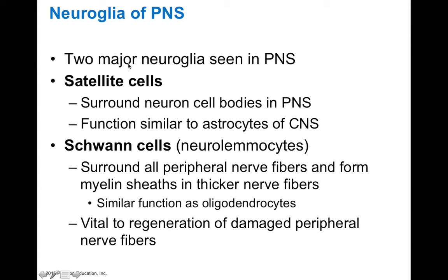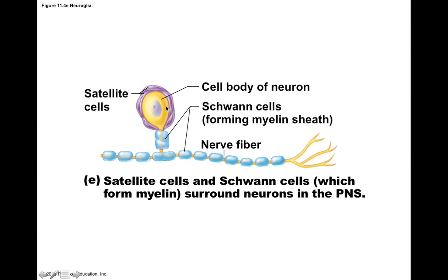In the peripheral nervous system, we have two major neuroglia: satellite cells and Schwann cells, also called neurolemocytes. Satellite cells surround neuron cell bodies in the peripheral nervous system and function similarly to astrocytes in the CNS, protecting and monitoring the environment around neurons. Schwann cells are functionally similar to oligodendrocytes — they surround peripheral nerve fibers and form the myelin sheath. They are vital to regeneration of damaged peripheral nerves, as neurolemocytes can help guide severed axons to reconnect following nerve injury.